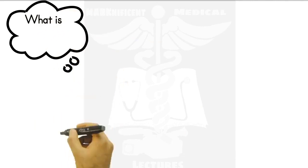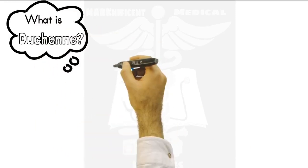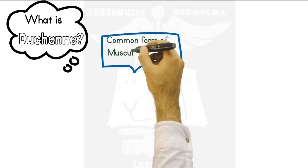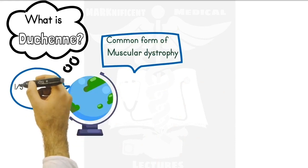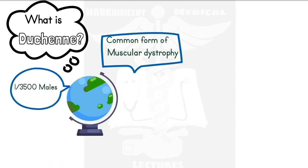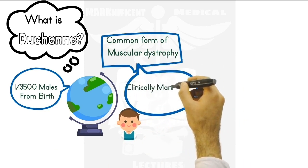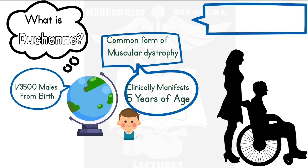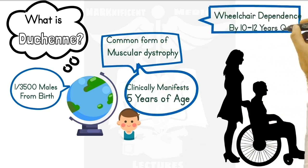So what is Duchenne? Let's look at it in more detail. Duchenne muscular dystrophy, or DMD, is a common form of muscular dystrophy. In the world, 1 out of 3,500 males from birth are affected. It clinically manifests at 5 years of age or under, and will eventually lead to wheelchair dependence, unfortunately, by the age of 10 to 12 years.